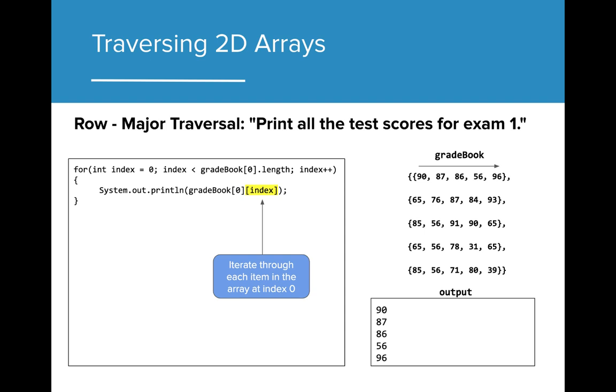The end result will look as such: each value from the first array will be printed on a separate line, and the program will stop executing.